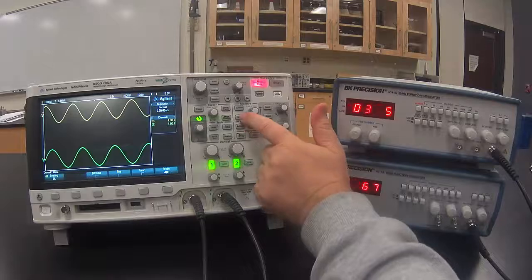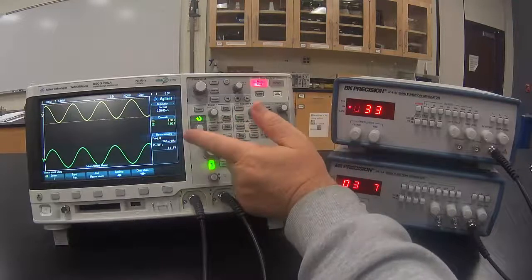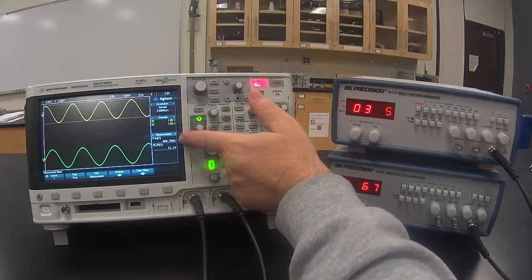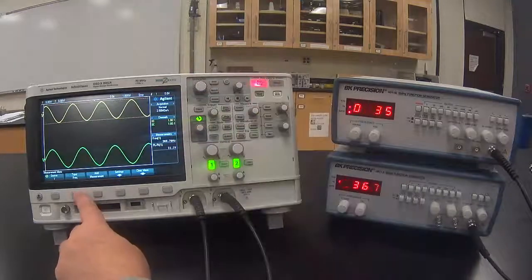Press the Measure button. The frequency and peak-to-peak voltage for channel 1 will be displayed on the screen. With this button here, you can change to channel 2.